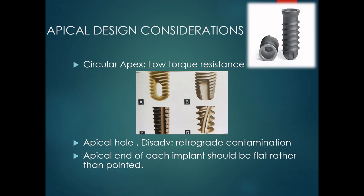A major disadvantage of the apical vent is that when an implant is placed through the sinus floor or exposed through a cortical plate, the apical hole may be filled with mucus and may become a source of retrograde contamination. Additionally, the apical end of each implant should be flat rather than pointed — flat surfaces increase the surface area and place surrounding bone under constant compressive load, whereas a pointed apex increases stress concentration.